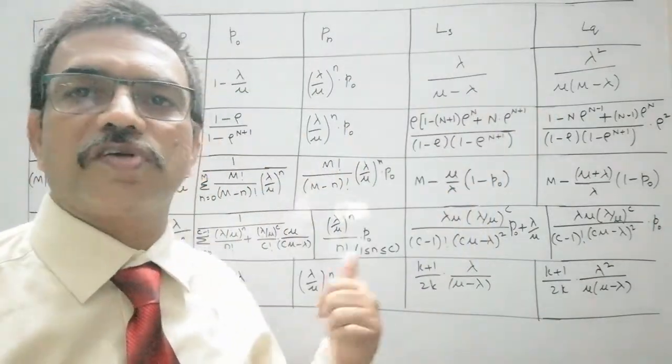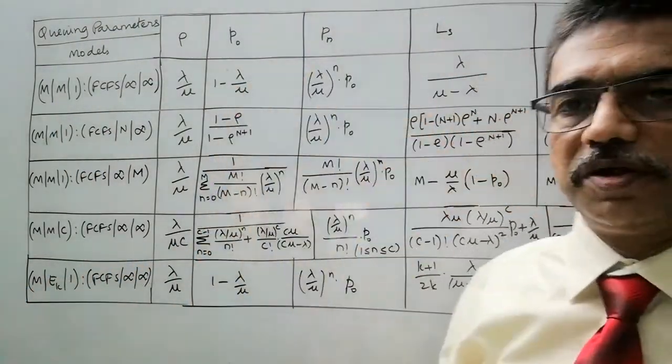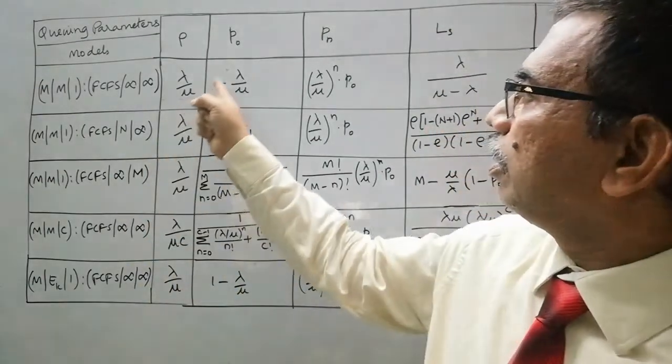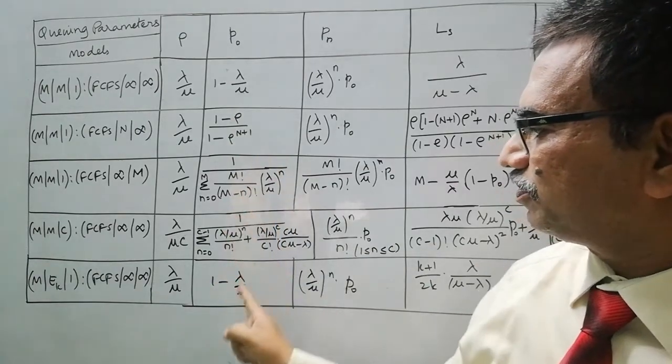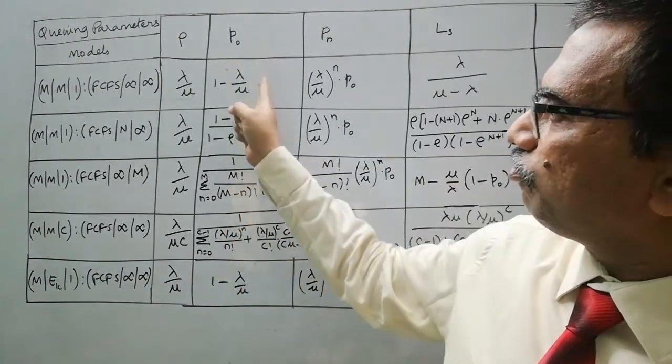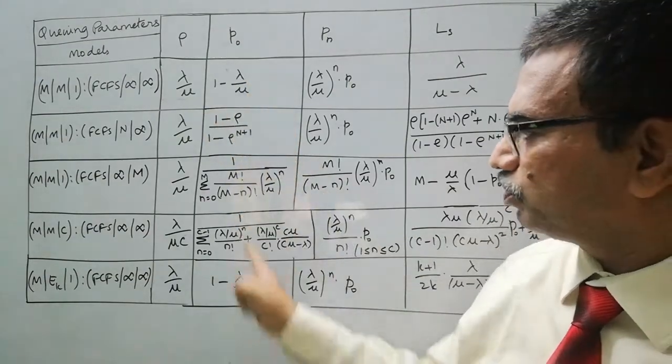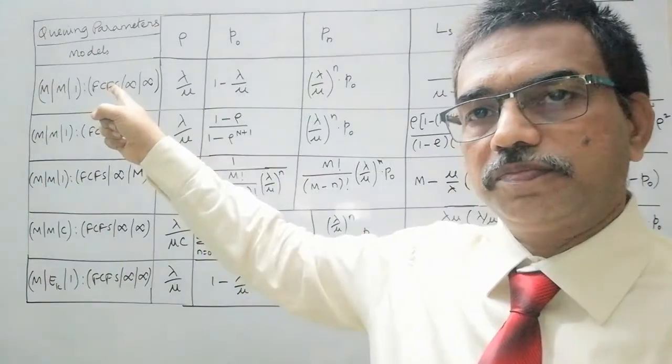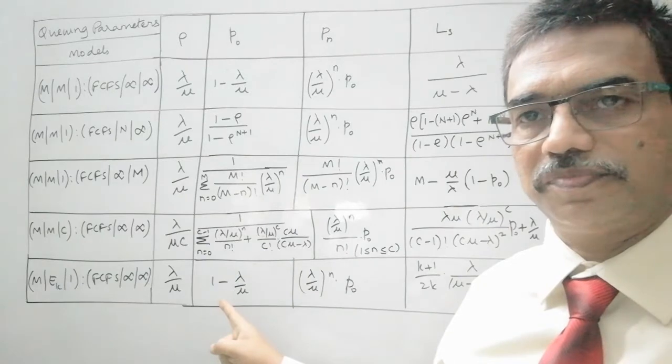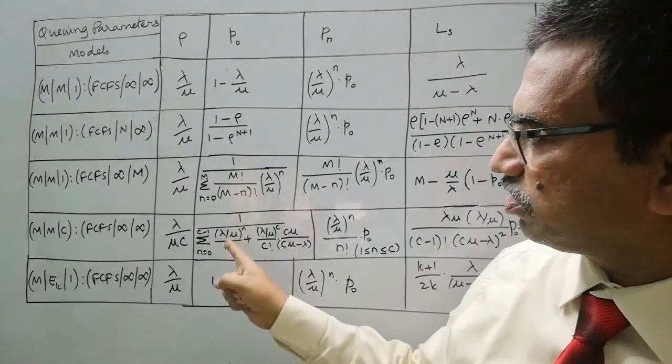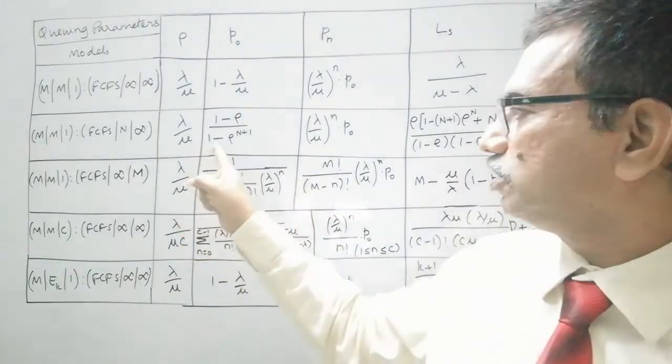Similarly for other models also, we can derive the expressions for these parameters. Here for P₀, we have the expressions like this. Here for these two models, it is same, that is 1 - λ/μ for single server model, and for multi-stage service model. And for the other models, that is multi-server, and for limited calling population and limited capacity models, it varies.